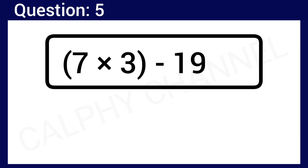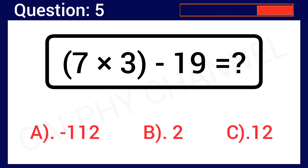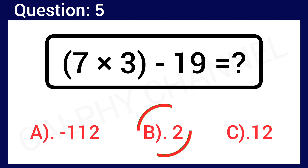Question number 5: 7 times 3 in the bracket minus 19 is worth what? Option A: negative 112, Option B: 2, Option C: 12. The correct answer is Option B, which is 2.